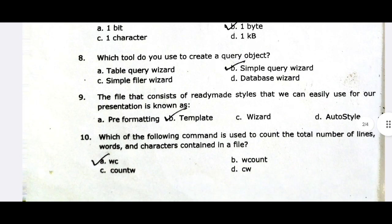The next question is: which command is used to count the total number of lines, words, and characters in a file? This is the wc command — it counts the total number of lines, words, and characters. That is the correct answer.